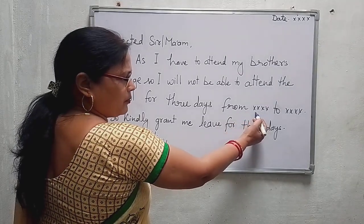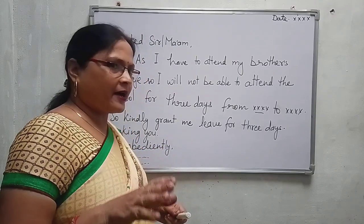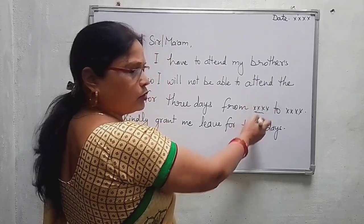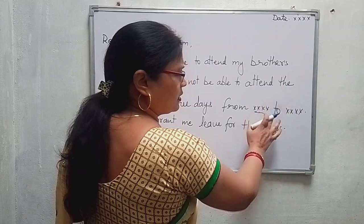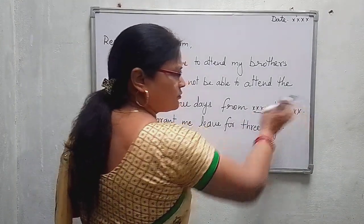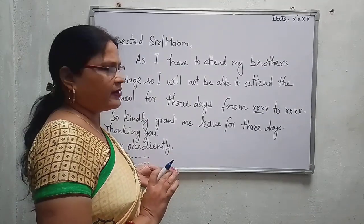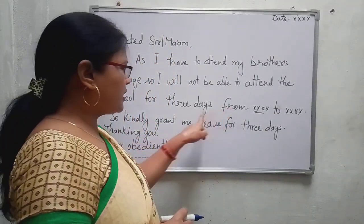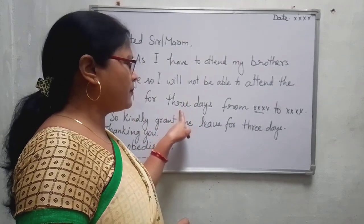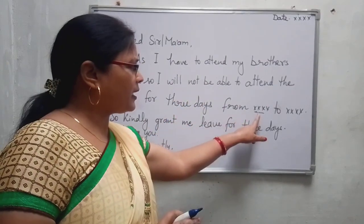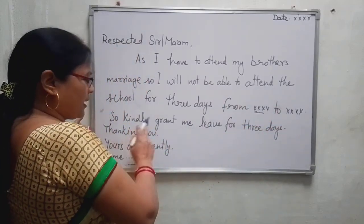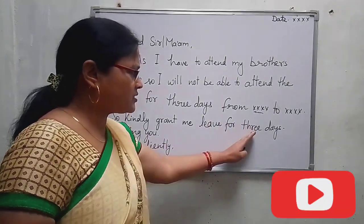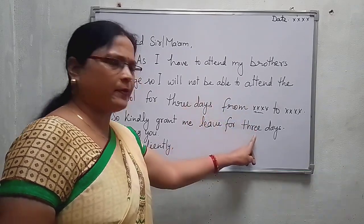Write the dates on which you will not attend school. For example, if you are absent for three days, write the first date, month, and year, then the last date. Like 'from this date to this date.' If you want to write five days, mention the first date and the last date — 'from the first date to the last date.' Then write: 'So kindly grant me leave for three days' — or however many days you need.